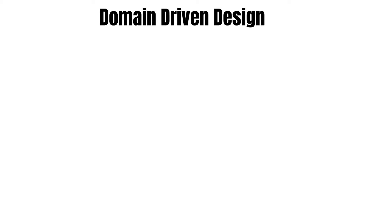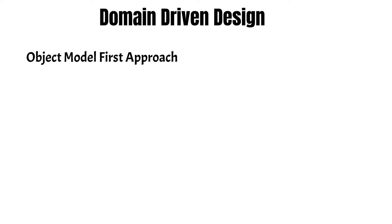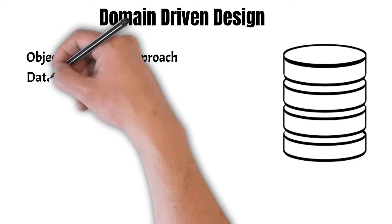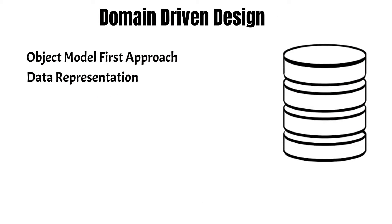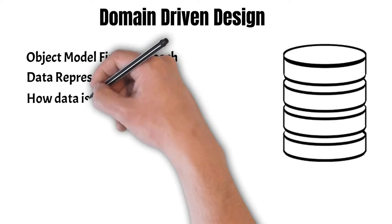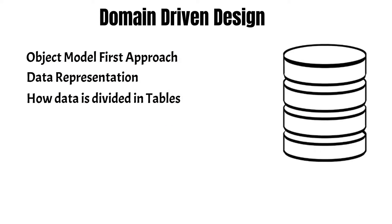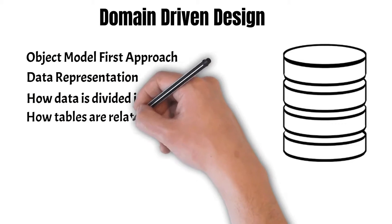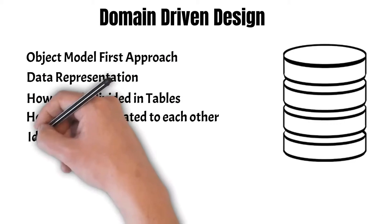For this purpose we first start with applying domain driven design. Here we follow an object model first approach, so we start by examining our database and we try to find out how the data is represented in that database, how the data is divided into different tables, and how the tables are related to each other.